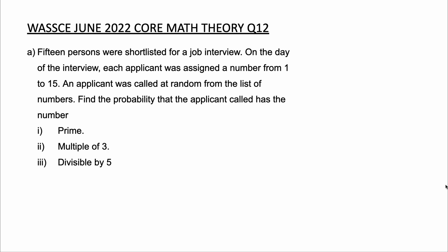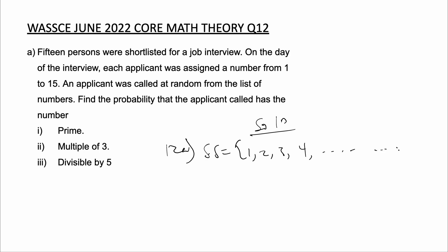15 persons were shortlisted for a job interview. On the day of the interview, each applicant was assigned a number from 1 to 15. An applicant was called at random from the list of numbers. Find the probability that the applicant's code has: I) a prime number, II) a multiple of 3, and III) divisible by 5. So our sample space is 1, 2, 3, 4, all the way to 15.